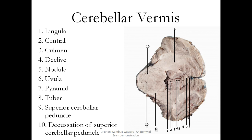If you look at the cerebellar vermis, it has multiple parts. Starting from the fourth ventricle: the first part is the lingula, then the central lobule, then the culmen. Then you have the decline, the nodule, the uvula, the pyramids, and the tuber. The superior cerebellar peduncles connect the midbrain to the cerebellum, and their decussation occurs at that point.